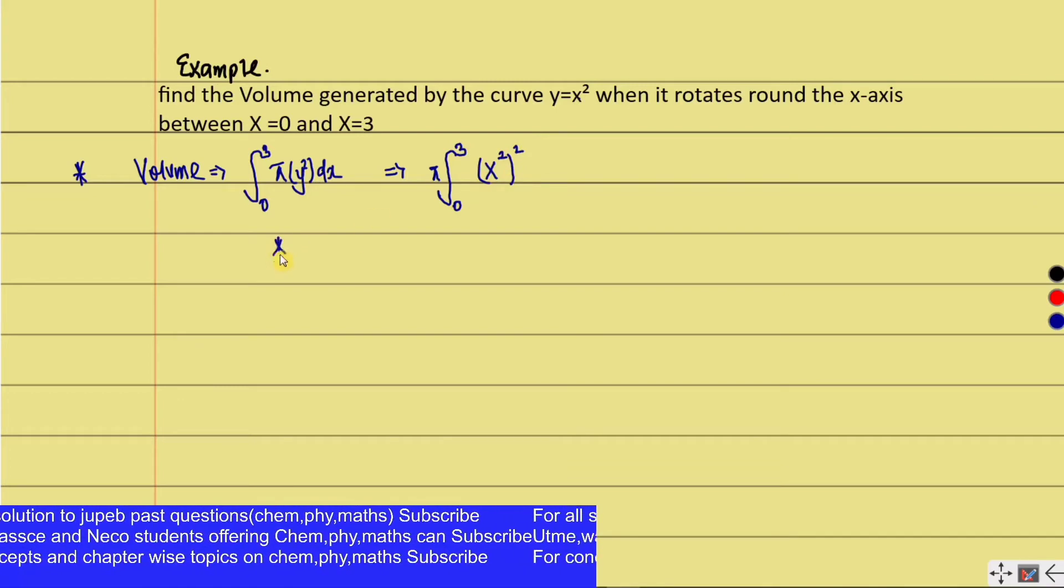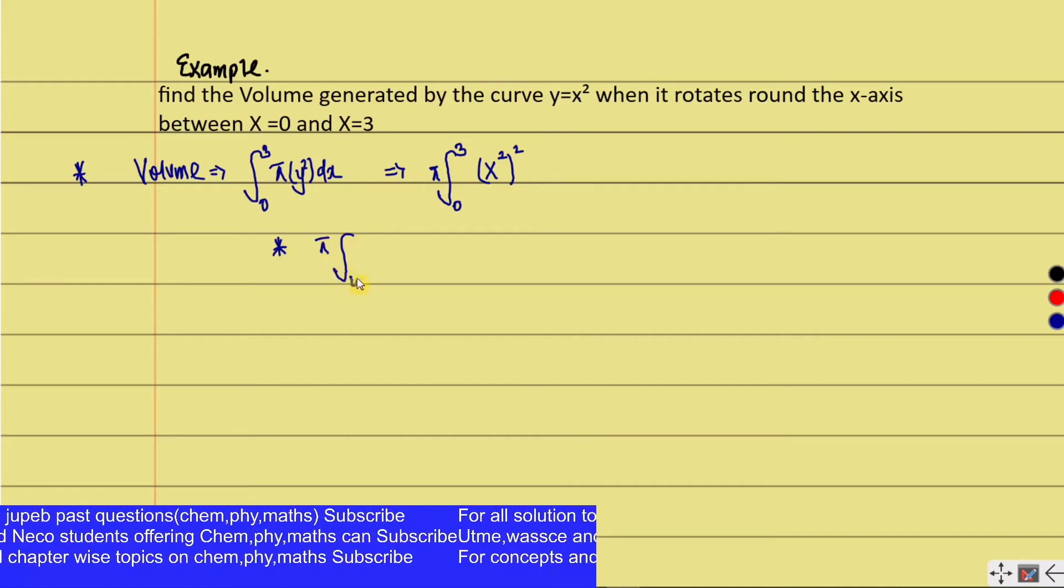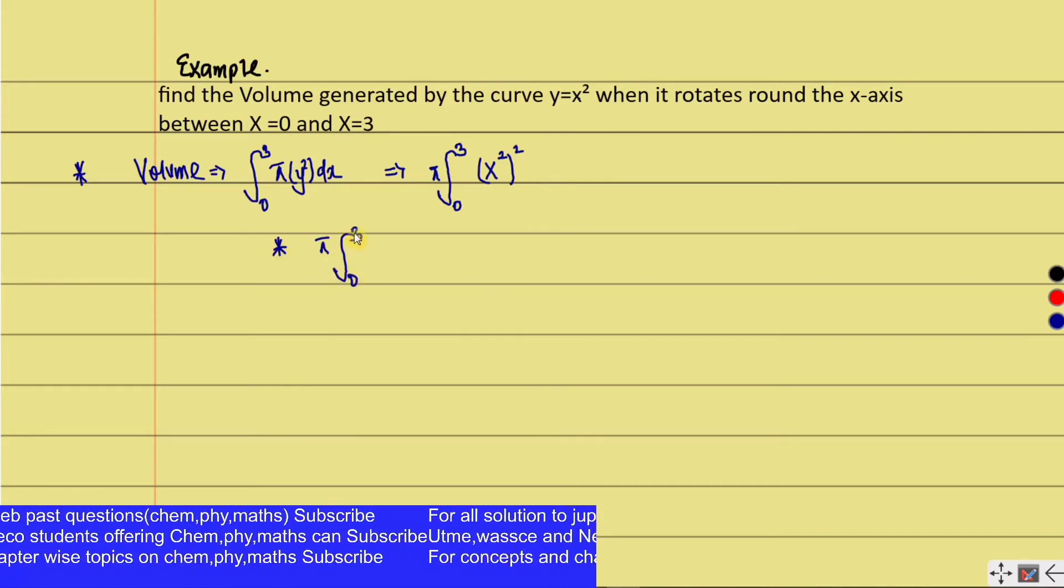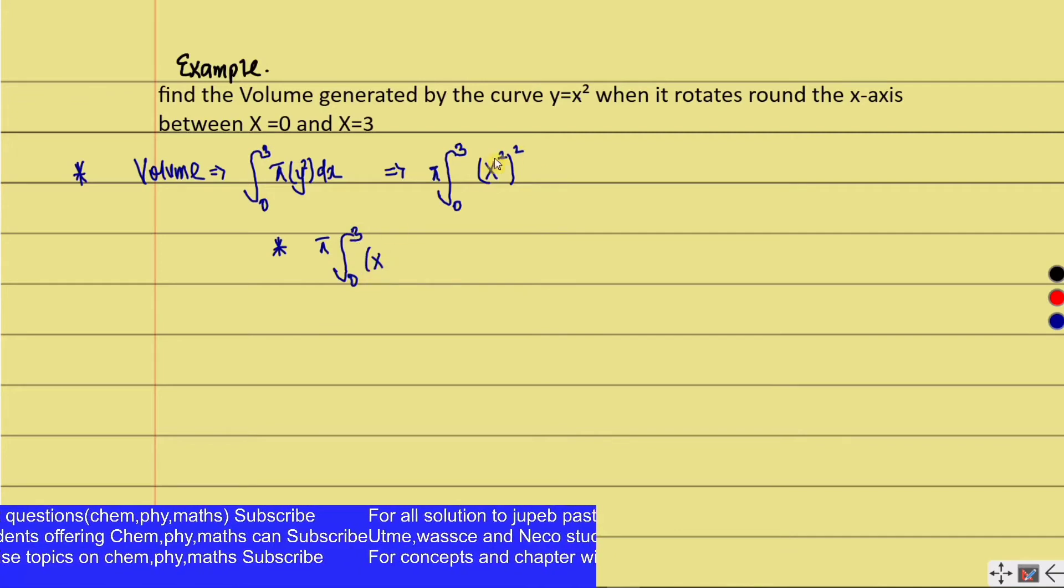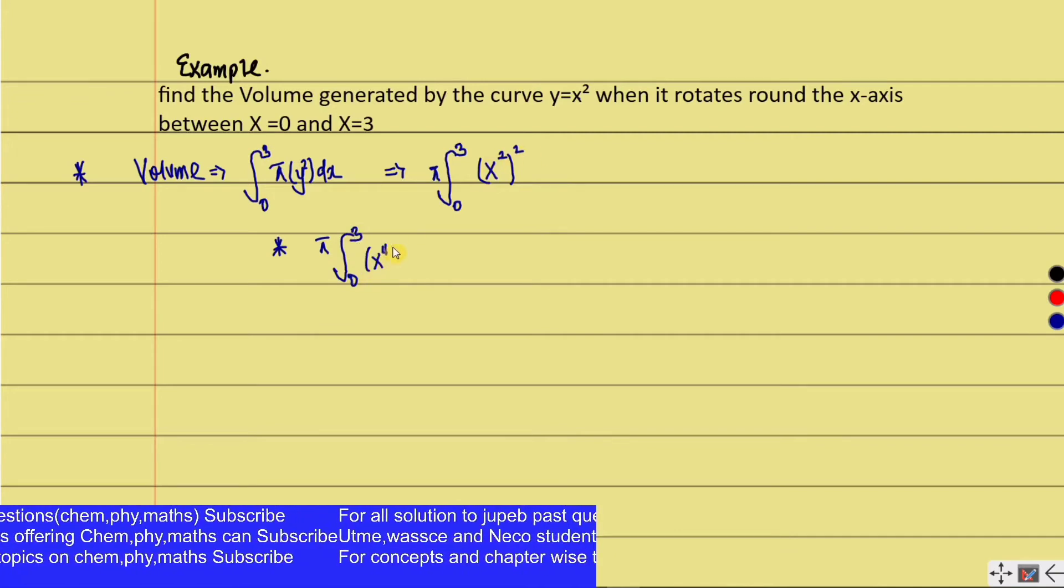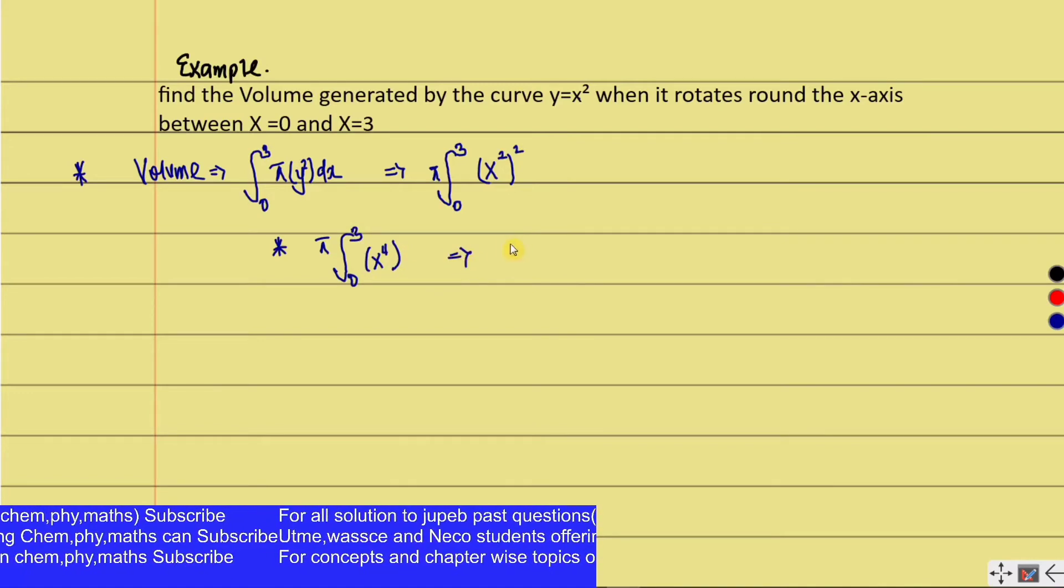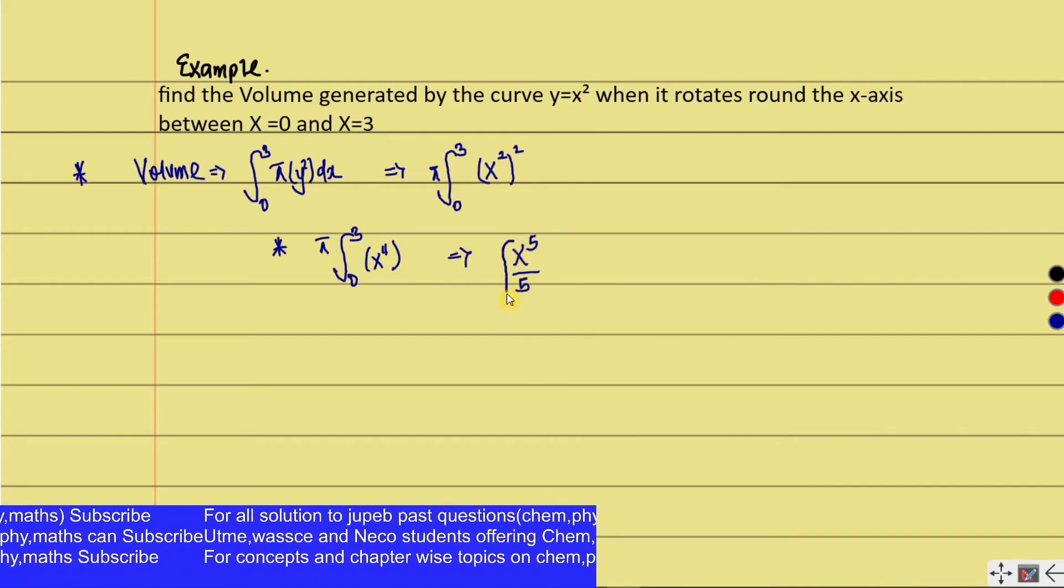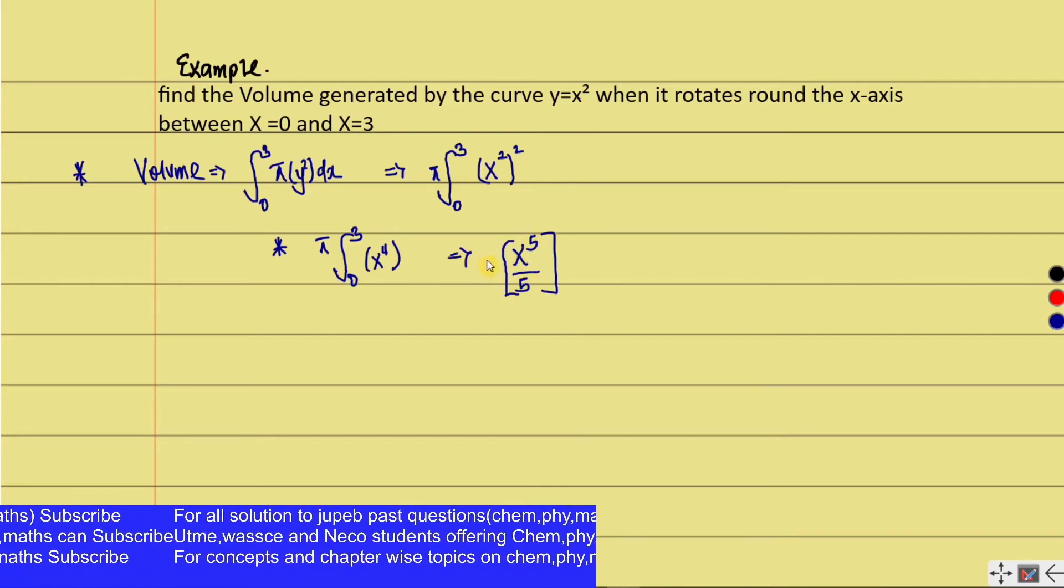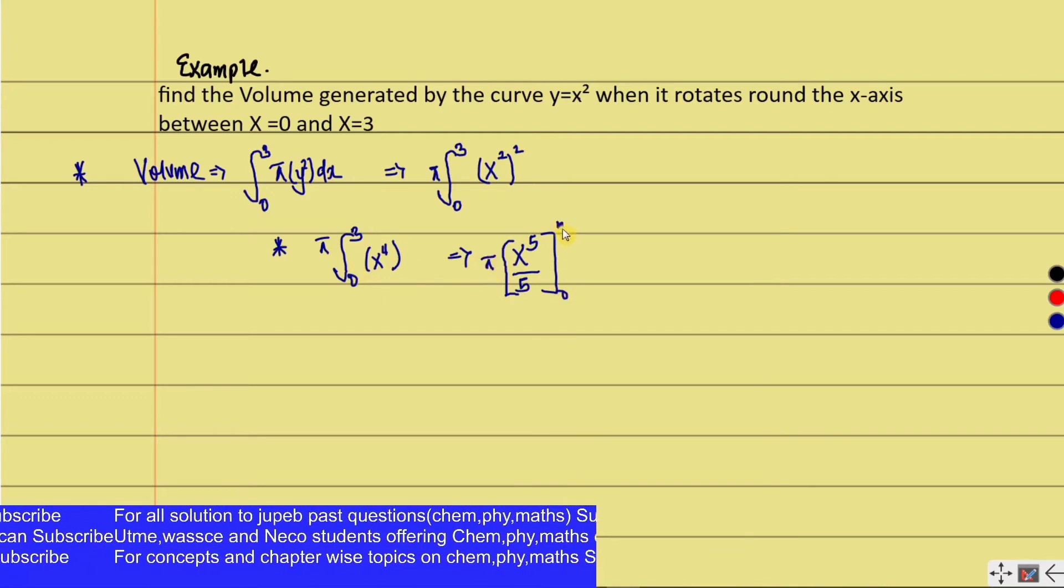The next step: we have π outside the bracket, integrating from 0 to 3. We integrate x to the power of 4, which gives us x to the power of 5 over 5, taking the limits from 0 to 3.